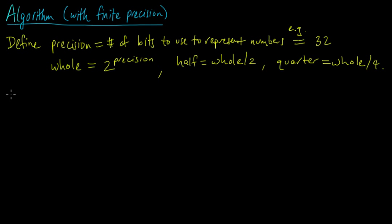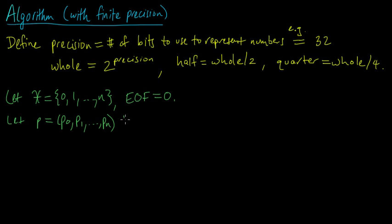All right, and now similar to before, let's let X be our source alphabet. It's going to be some finite set; we'll label it 0 to n as usual, and we'll designate our end-of-file symbol to be 0. And we will similarly, just like before, have some probability mass function p on this set: p_0 up to p_n be a pmf on X.